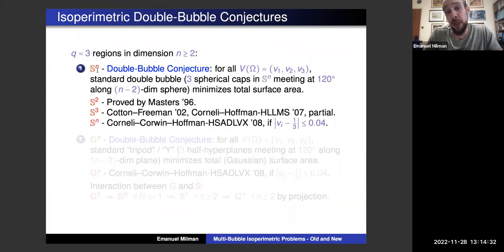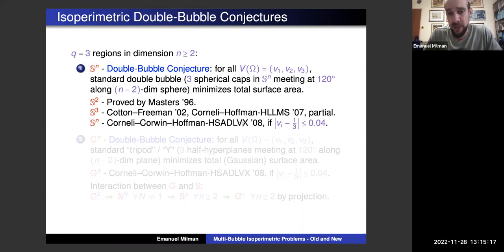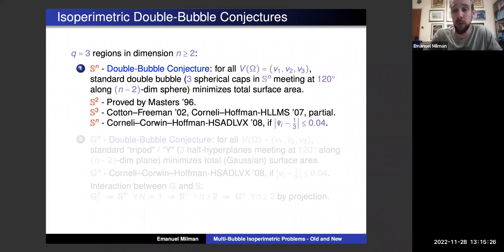On the sphere Sⁿ, the double bubble conjecture — that for all prescribed volumes (v₁, v₂, v₃) summing to one, the standard double bubble minimizes total surface area, consisting of three spherical caps meeting at 120-degree angles — was still open until recently. The two-dimensional case was resolved by Masters, but in dimension three and higher it remained open. Corneli, Corwin, Hoffman, and seven additional authors showed that if you are close enough to the equal-volume case (within four percent of the ⅓-⅓-⅓ case), the conjecture holds, but otherwise it was open.